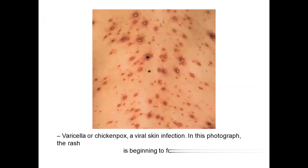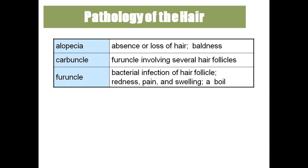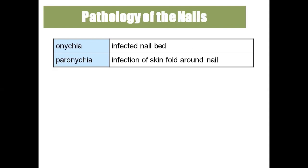Pediculosis is lice infestation — lice can be seen in our hair. Psoriasis is a chronic inflammatory condition with papules forming silvery scale patches. Rubella is also called German measles. Scabies is mite infestation. Alopecia means baldness — absence or loss of hair. Carbuncle is a furuncle involving several hair follicles, resulting in bacterial infection with redness, pain, and swelling. Paronychia is infection of the skin around the nail.